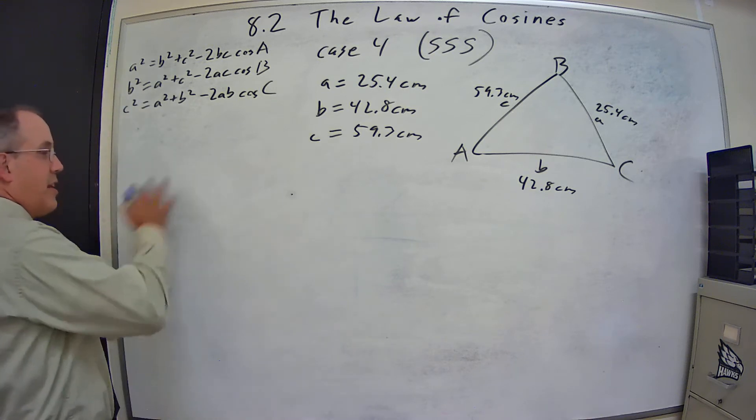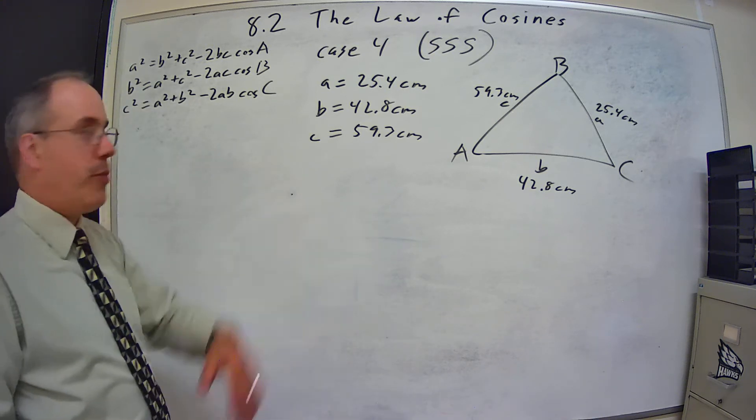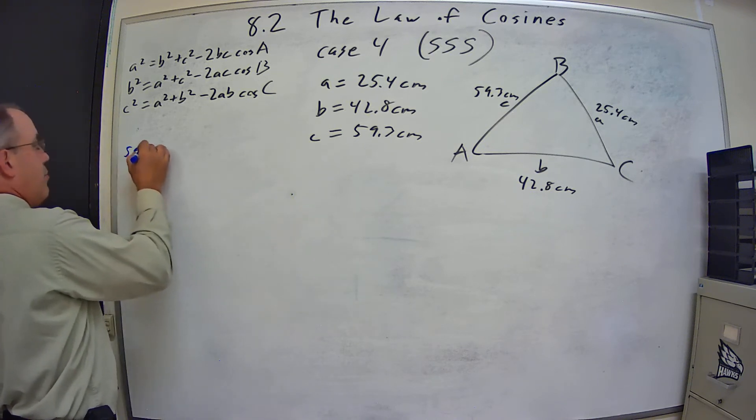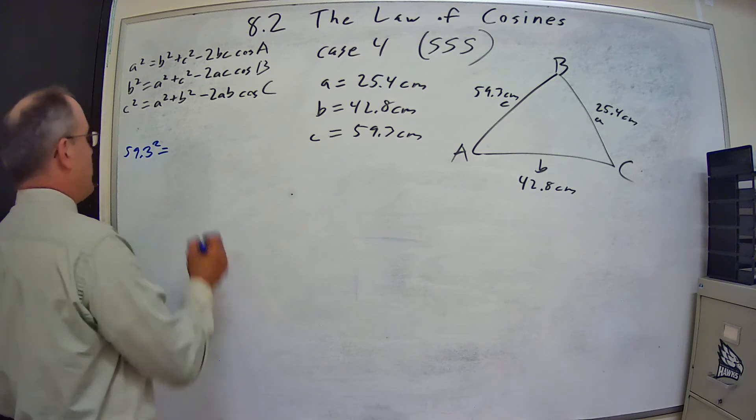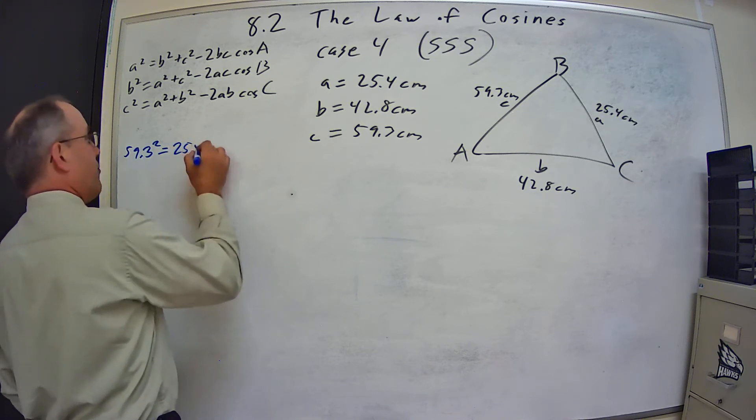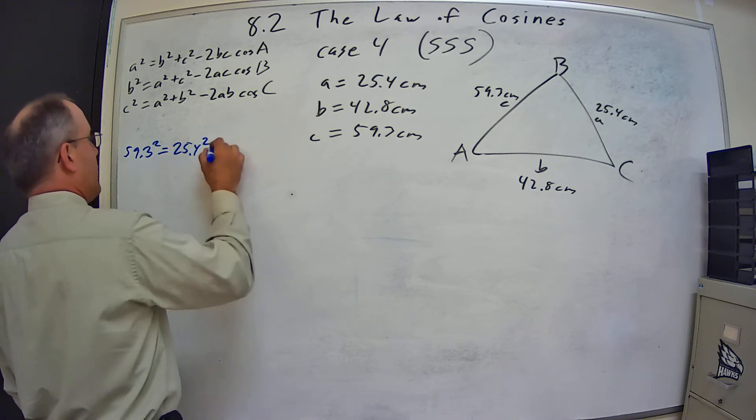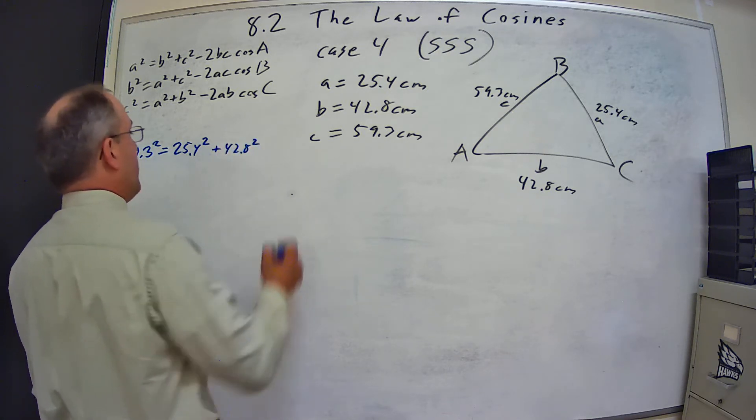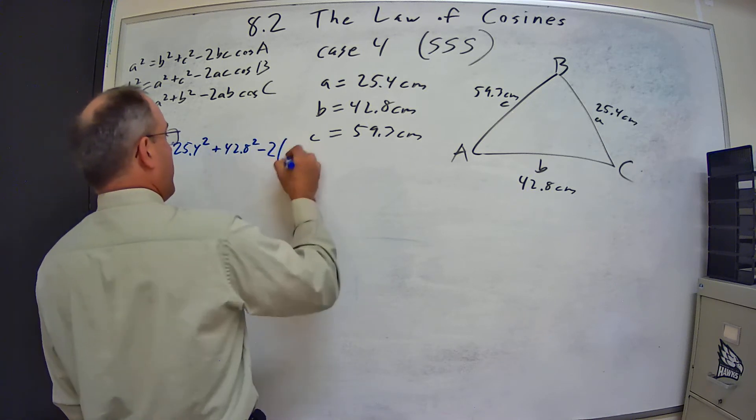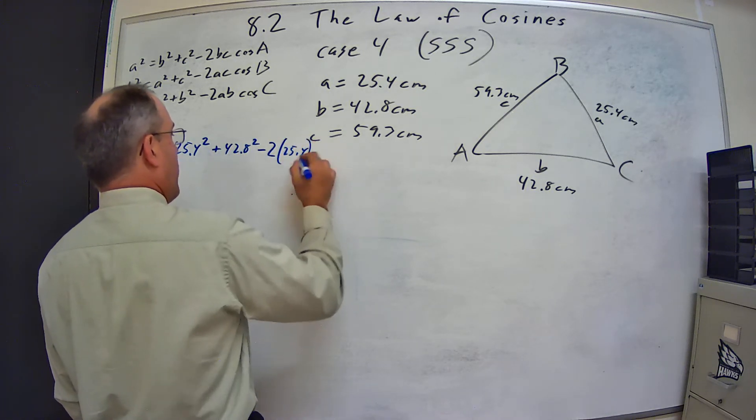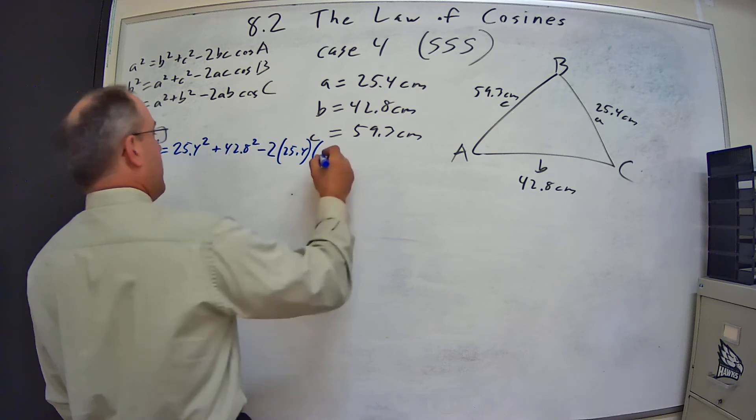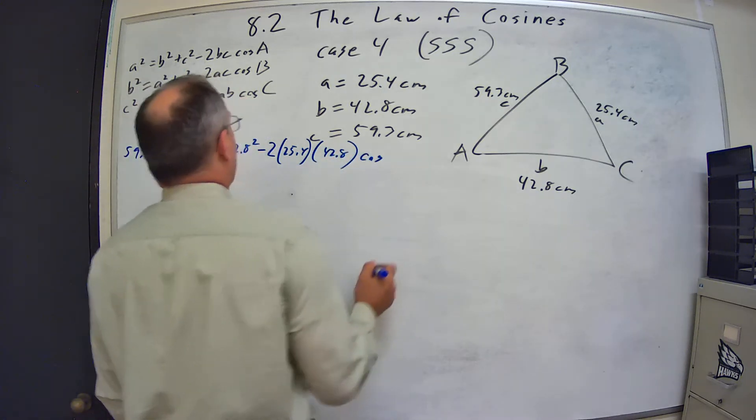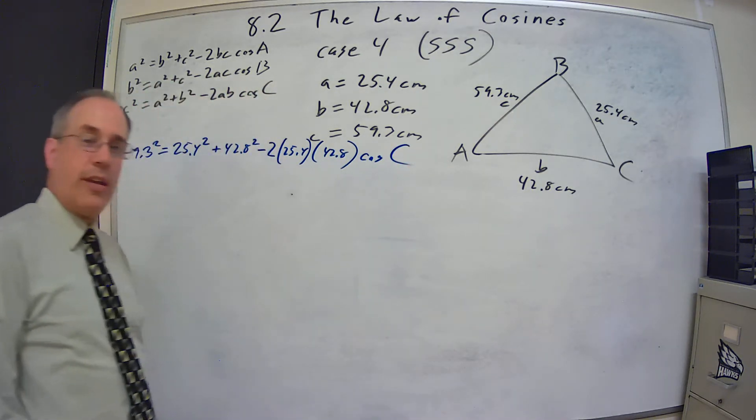So now I'm going to start plugging things in. I'm going to start over here this time just because this could be messy and then I'll work my way across. So I have c squared, so that's 59.3 squared, is equal to a squared, 25.4 squared, plus b squared, 42.8 squared, minus 2 times a, 25.4, times b, 42.8, times cosine of angle c. That's what I'm trying to find.